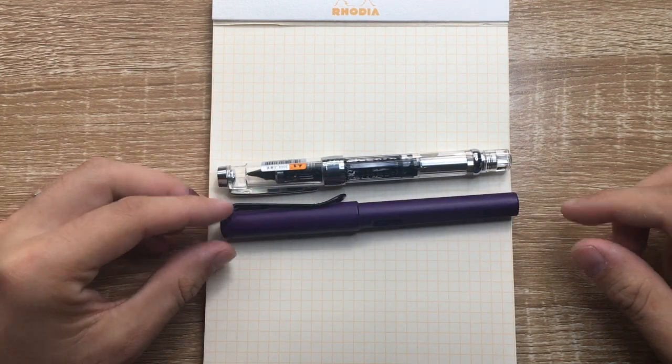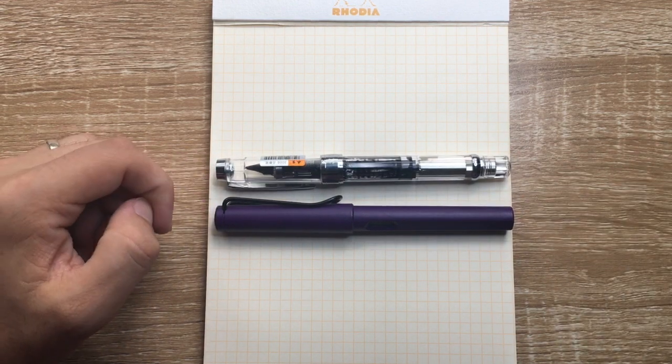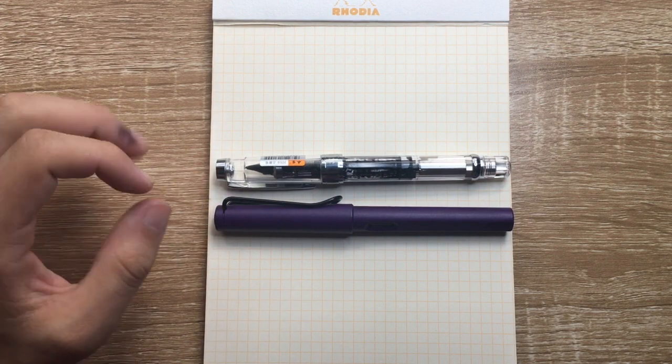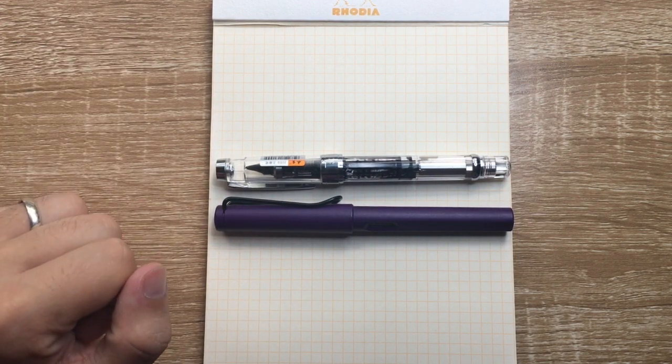Now here it is in comparison to a Lamy Safari and while we're here we will do the measurements. So the Wingsung clocks in at 139 millimeters, just one millimeter or just thereabouts shorter than the Lamy Safari.